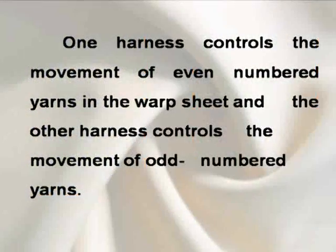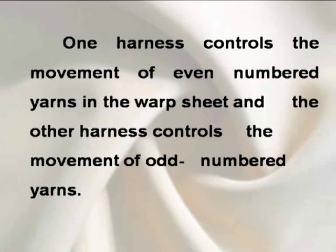One harness controls the movement of even numbered yarns in the warp sheet and the other harness controls the movement of odd numbered yarns.